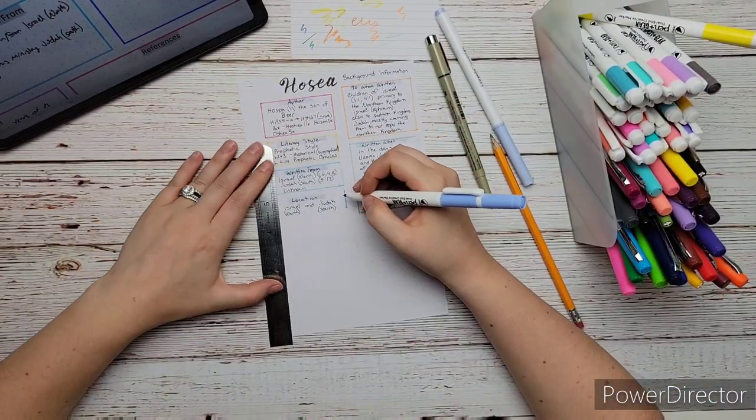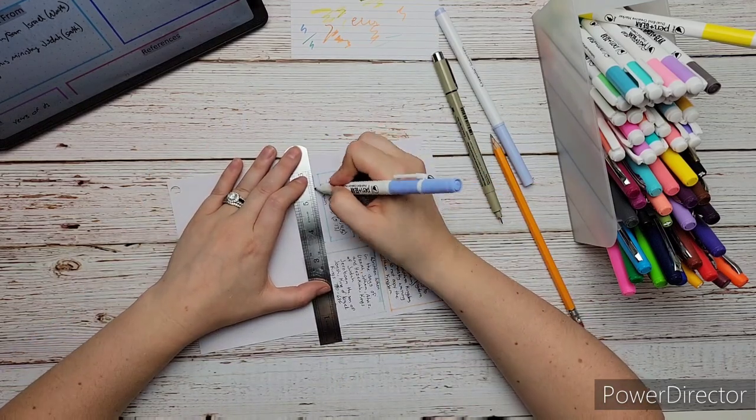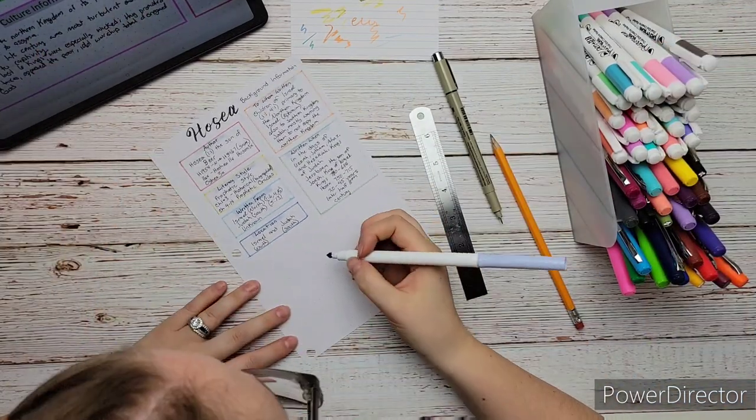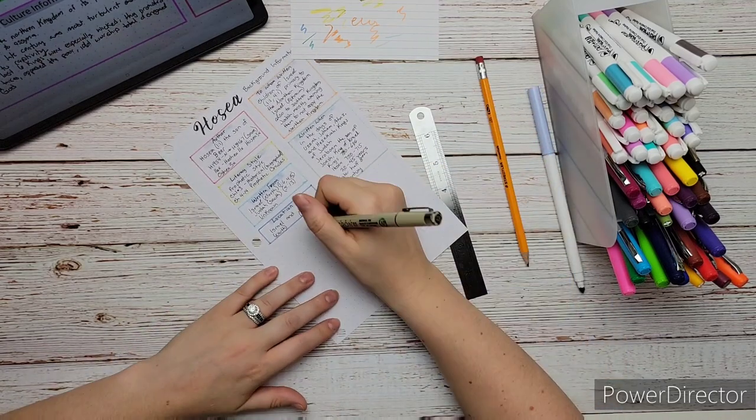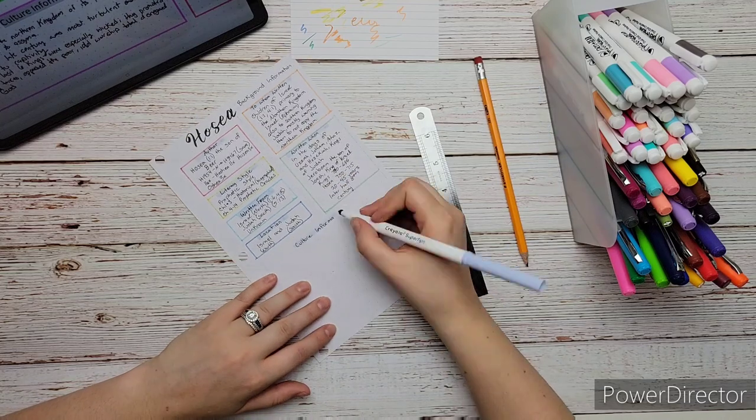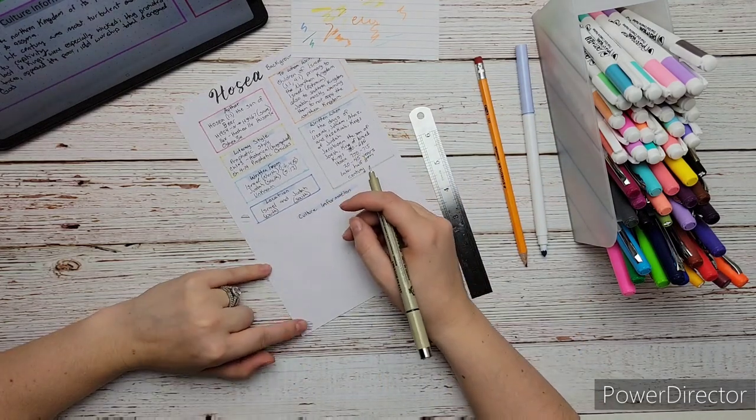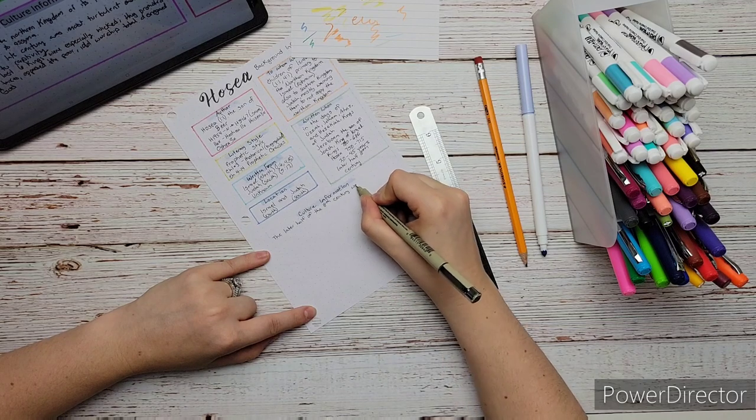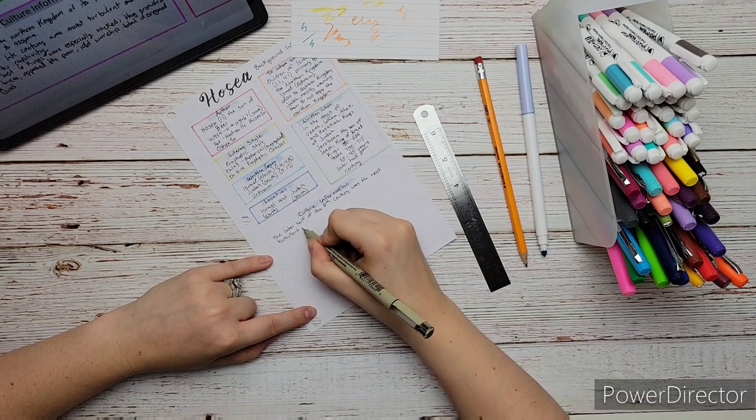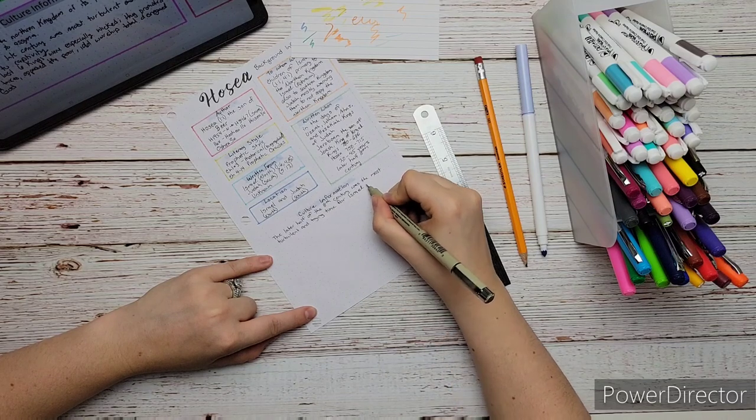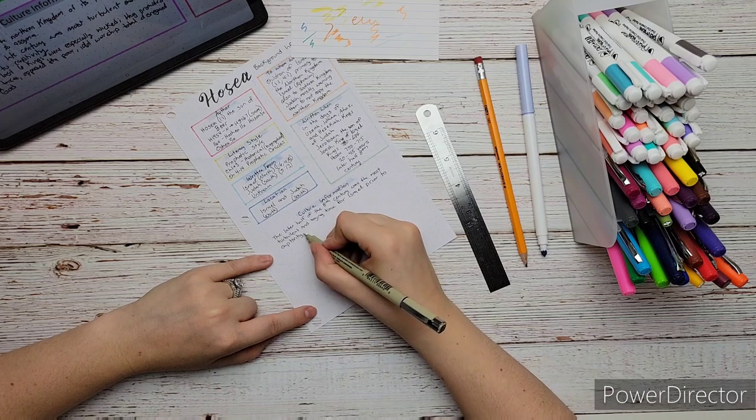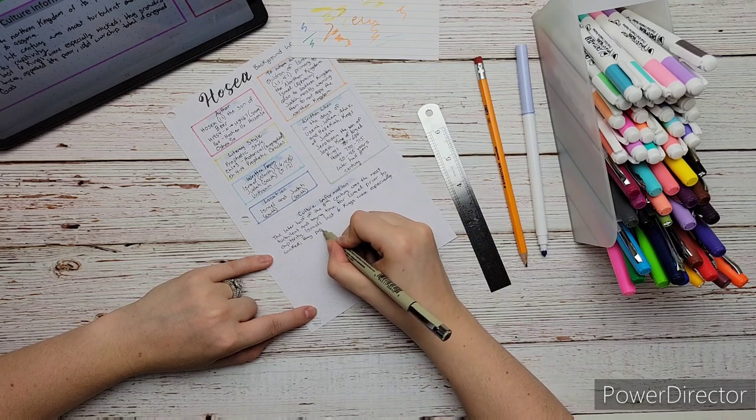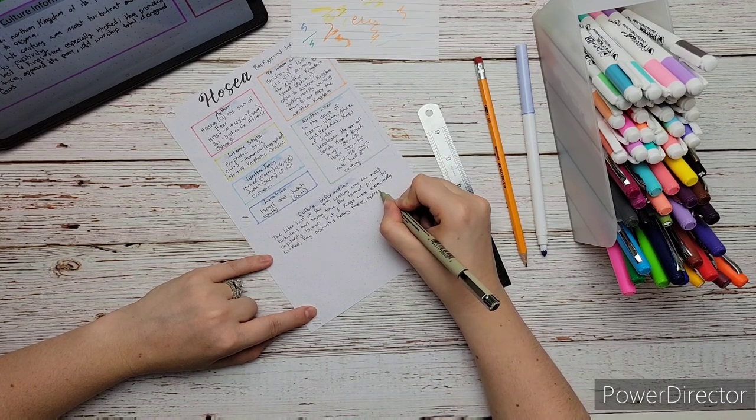And last but not least we get into the cultural background information. What can we learn from the cultural or the background information? And basically it is primarily in the later half of the 8th century was the most turbulent and trying time for Israel prior to the captivity. Israel's last six kings were especially wicked. They promoted heavy taxes, oppressed the poor, and worshipped pagan gods and idols, totally disregarding God. It is the years of decline leading up to the fall to Assyria. So it was a pretty hectic time although probably physically they became rich in some sort of ways but spiritually they were dying pretty dead.